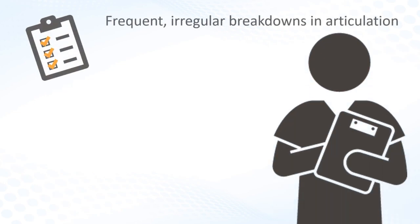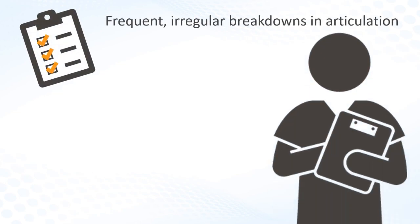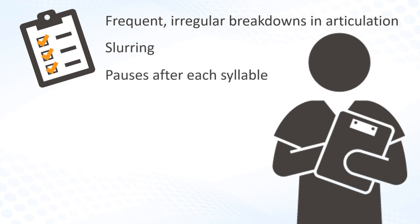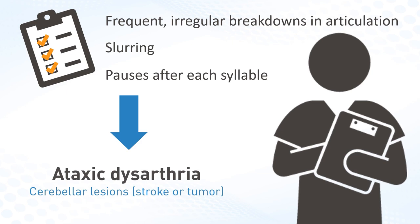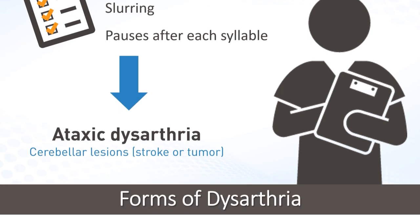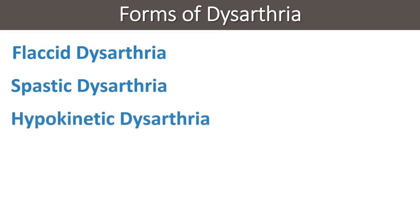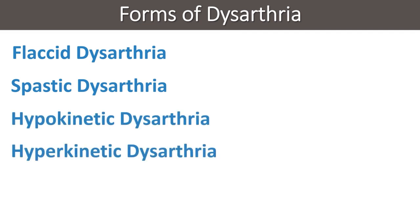Based on the clinical findings of frequent irregular breakdowns in articulation, slurring, and pauses after each syllable, our patient's speech can be classified as ataxic dysarthria, which is often seen with cerebellar lesions like stroke or tumor. Other forms of dysarthria include flaccid, spastic, hypokinetic, and hyperkinetic dysarthria.